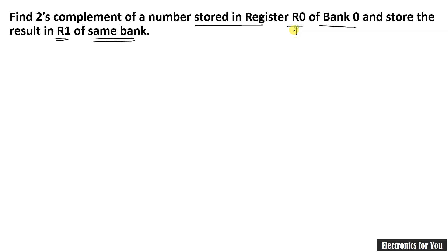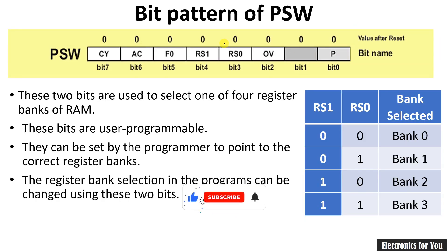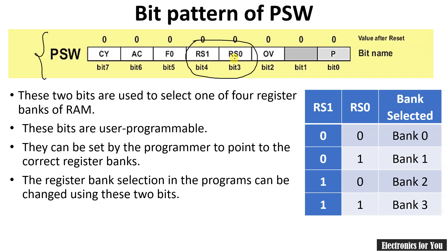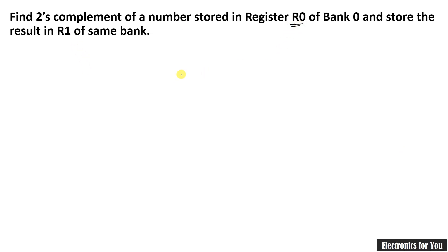First we have to select the register bank to get the number from register R0. Here is the bit pattern for the PSW register, which has two bits — bit 4 and bit 3, that is RS1 and RS0 respectively — to select the register bank. We have to choose bank 0, and to do so we have to make RS1 and RS0 as 0, then register bank 0 will be chosen.